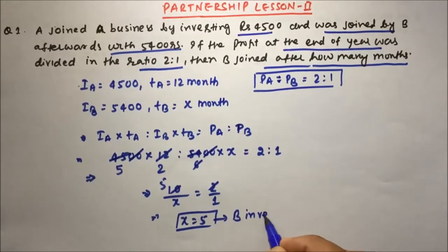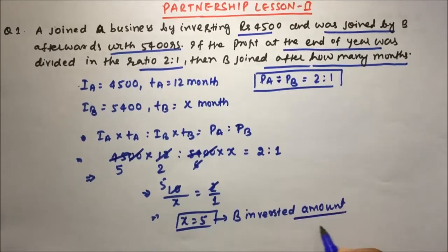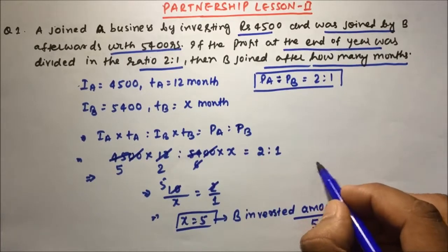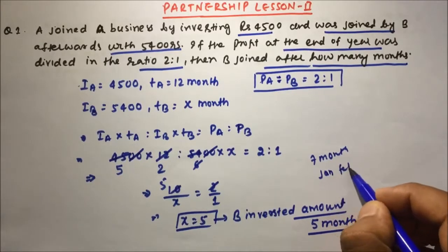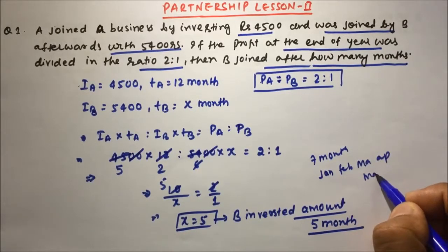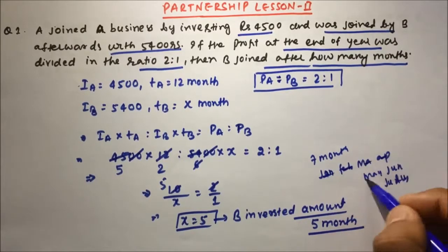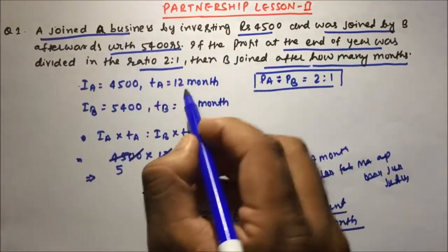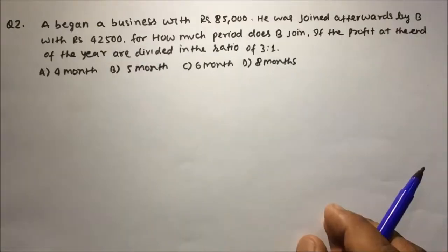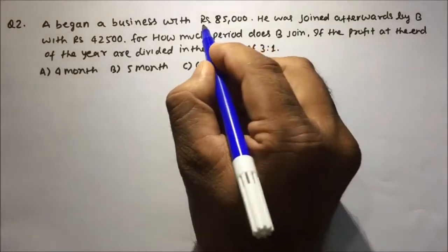B invested for 5 months, which means B joined after 7 months — that is, after January, February, March, April, May, June, and July. So B joined after 7 months, and that is why B could only invest for 5 months while A invested for 12 months. Now, question number two: A began a business with 85,000 rupees.